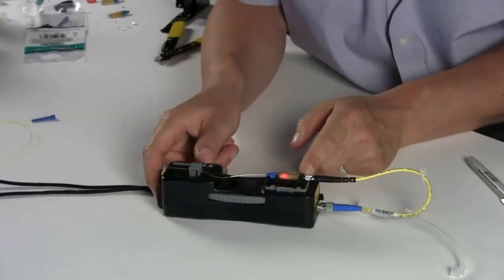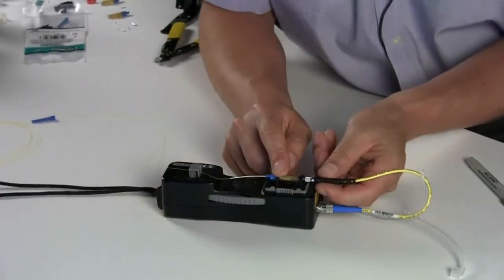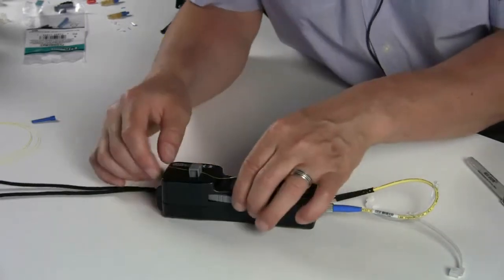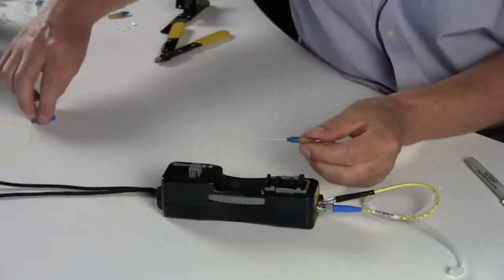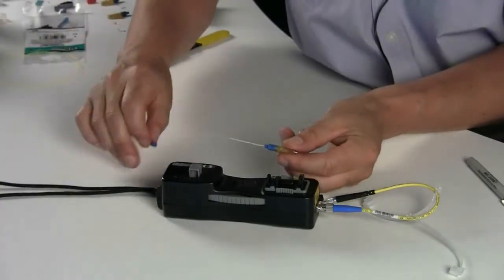After termination, shut the VFL off. Pull the VFL cord off. Release the fiber from the clamps. Pull up the LC. And slide the boot on.